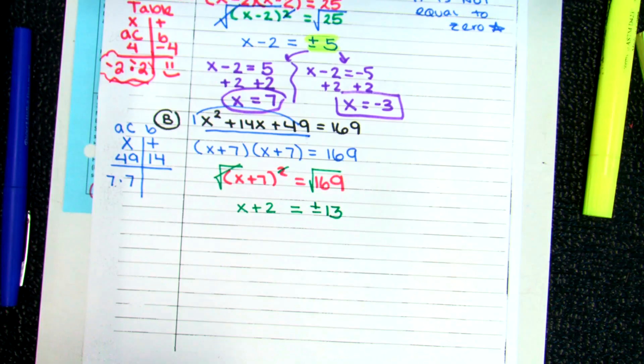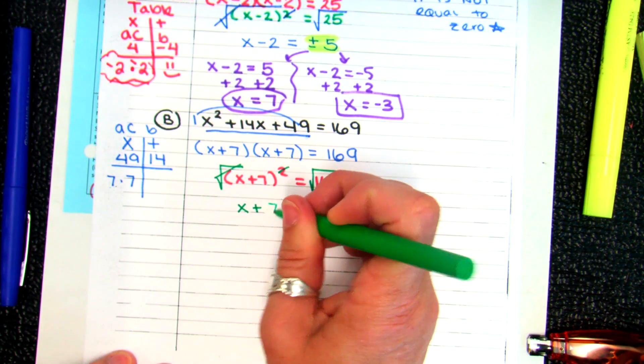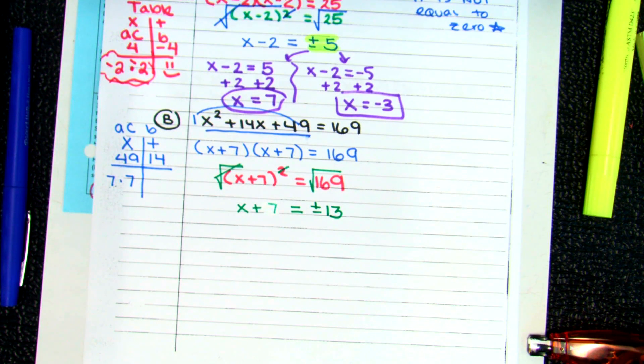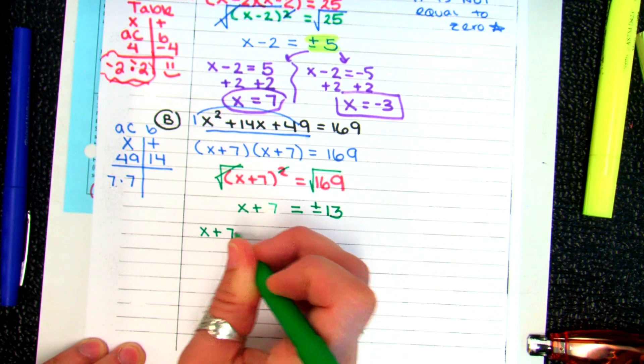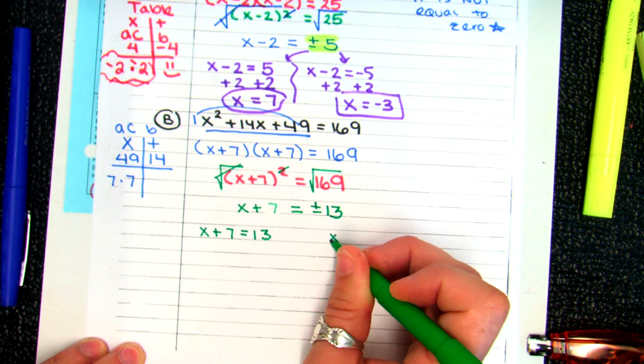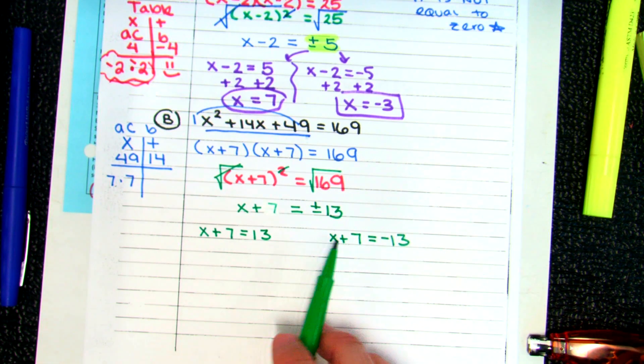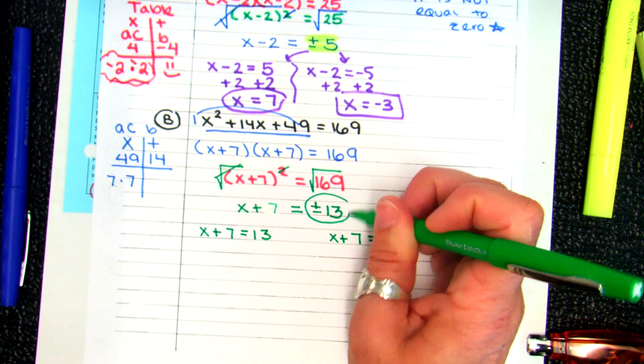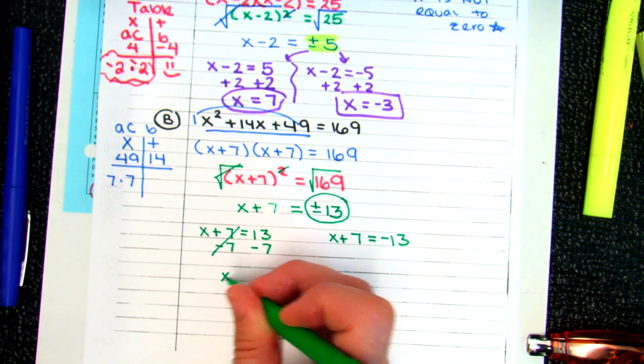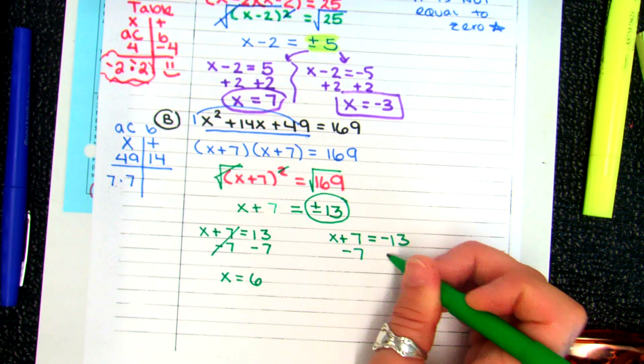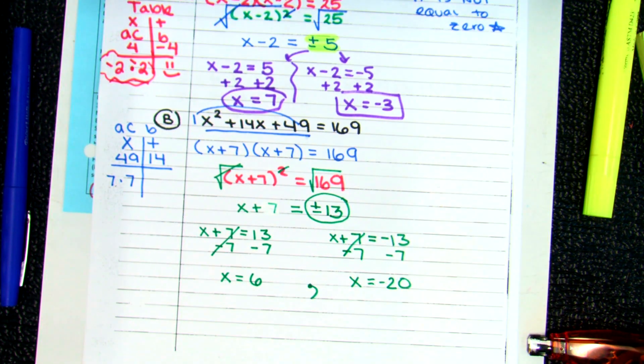Then take the time to set up two equations. I'll see kids get to here and then they make silly mistakes because they try to rush this. The other thing is they make one of the 7s positive and the other negative. The sign change or the plus or minus is on the 13, so be careful. Minus 7 from both sides. Your first answer should be 6. And your second answer should be negative 20. Are there any questions about that one? No.